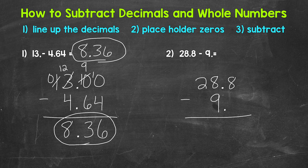Now we need a placeholder zero. But notice the difference between number 1 and number 2. For number 1, we subtracted from the placeholder zeros, so we needed to borrow. For number 2, we're going to end up with 8 minus 0 in the tenths place, which gives us 8. So depending on whether we have a whole number minus a decimal, or a decimal minus a whole number, that impacts how these problems work out — something to keep in mind.